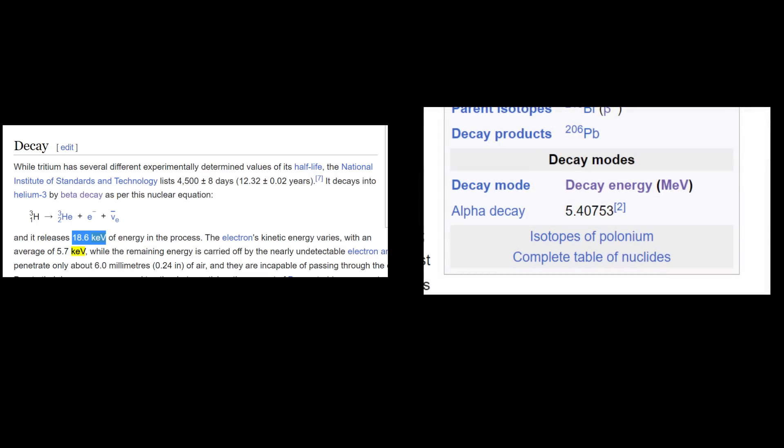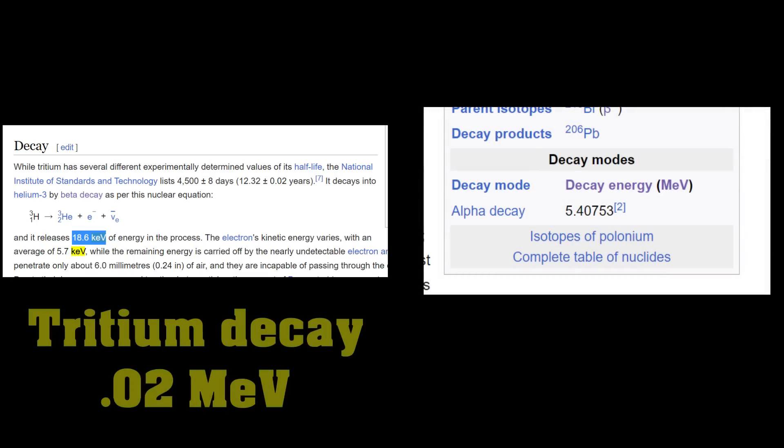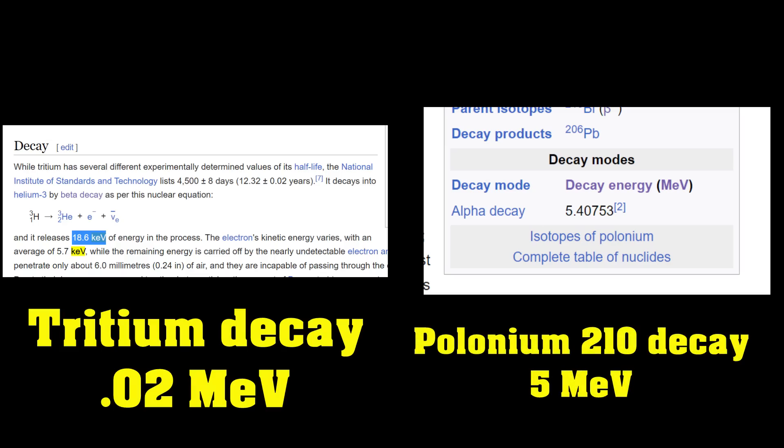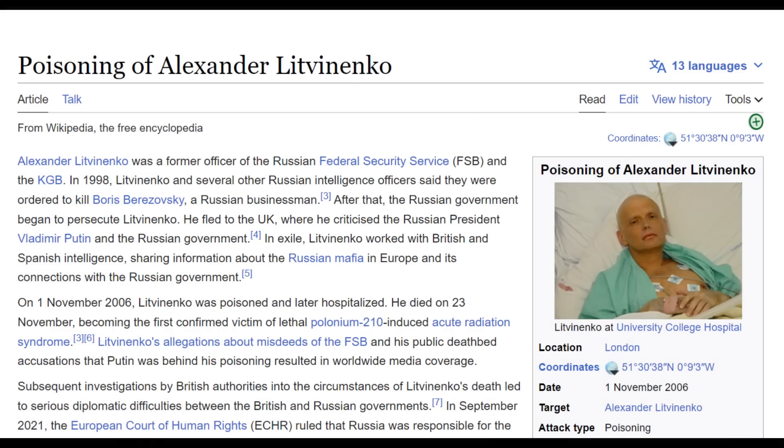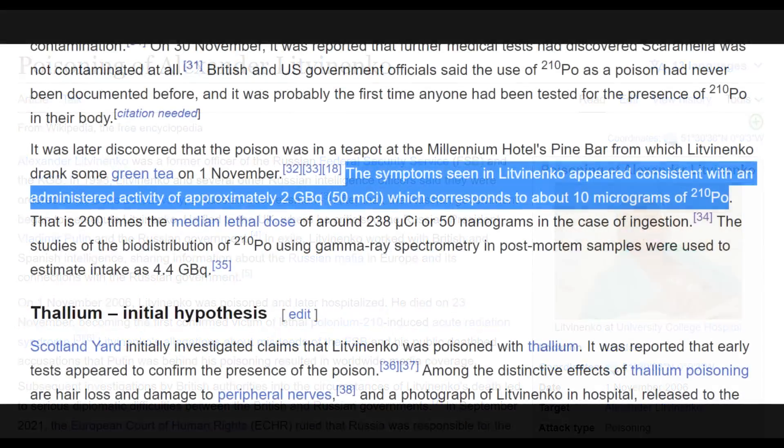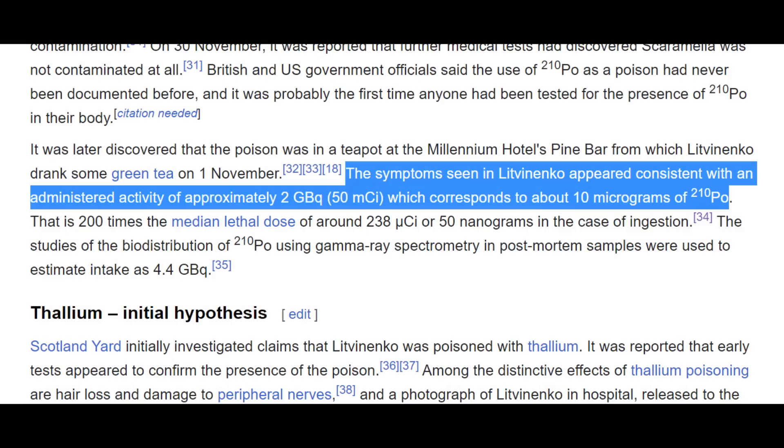Now, some might say, hang on, you just put two numbers up there that are way different. One is 0.02 mega-electron volts, and the other one was 5 mega-electron volts. There's over a hundred times difference between those two numbers. Well, yes, but sometimes that really doesn't make a big difference. It's like debating which is more dangerous, getting shot by bullets or railgun bullets. None of it's really going to change the ultimate conclusion that they're both kind of dangerous. So, how toxic is tritium compared to, say, polonium-210, which was most famously used in the murder of journalist Alexander Litvinenko?